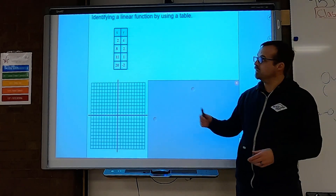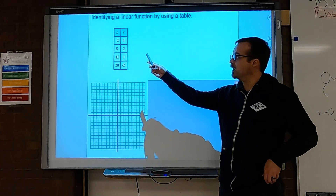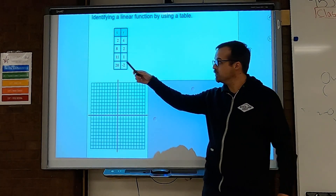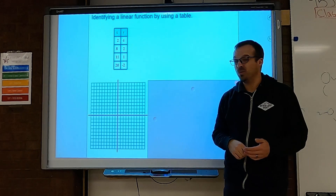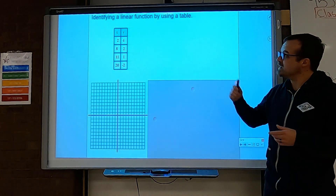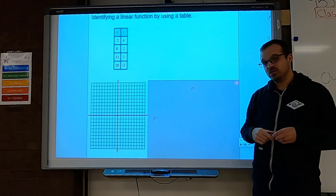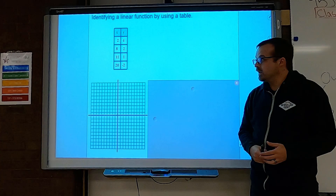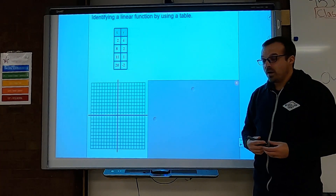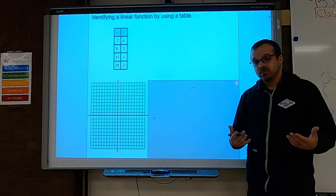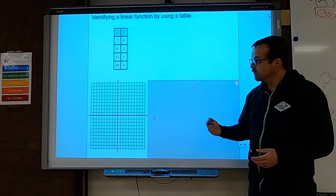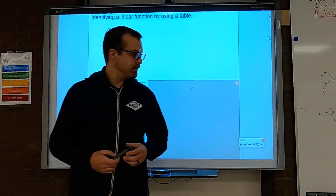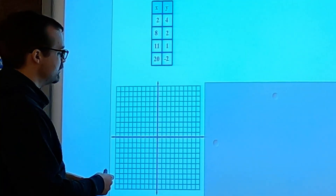Let's put that definition into practice. Here I have a table of ordered pairs: x-values of 2, 8, 11, and 20; y-values of 4, 2, 1, and negative 2. I want to identify whether or not this shows a linear relationship. Using the graph, let's plot the points and see if they make a straight line. We have (2,4), then (8,2), then (11,1).